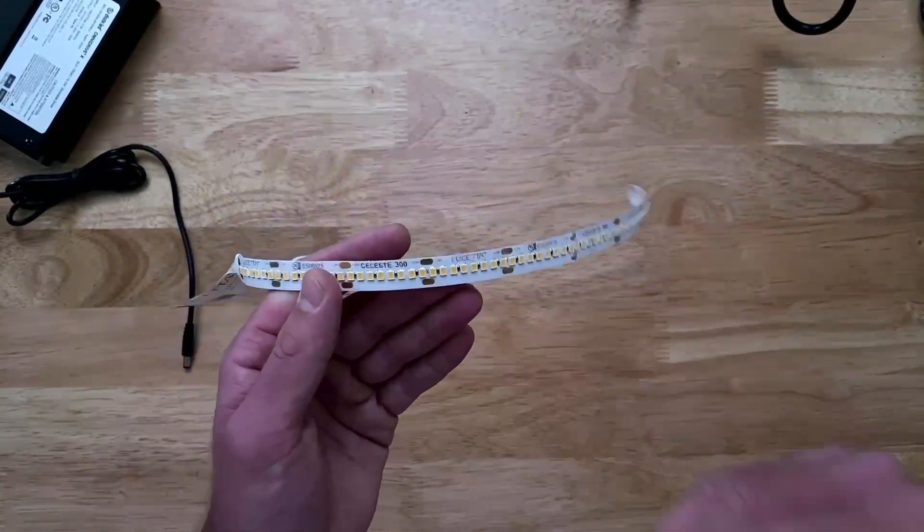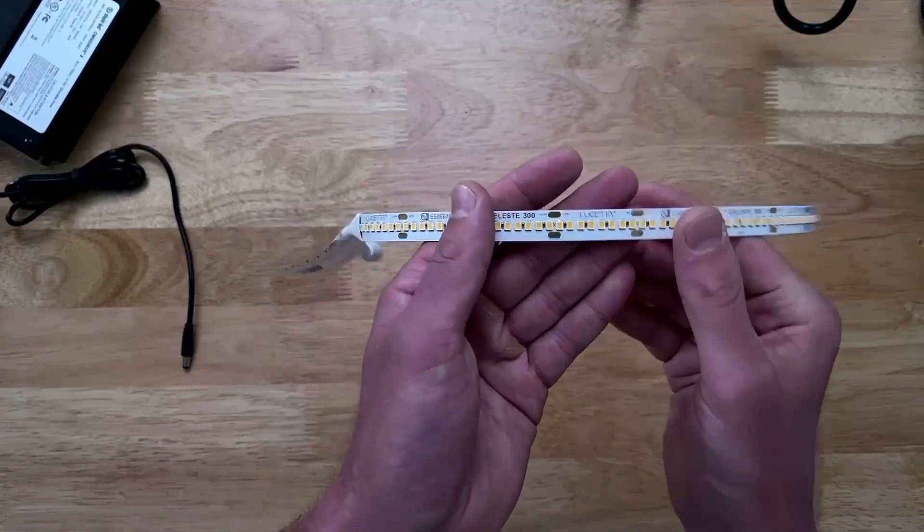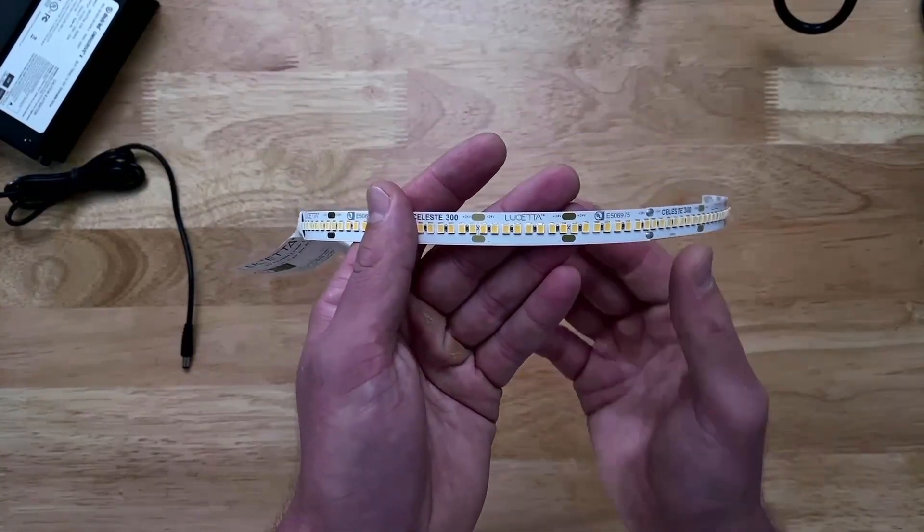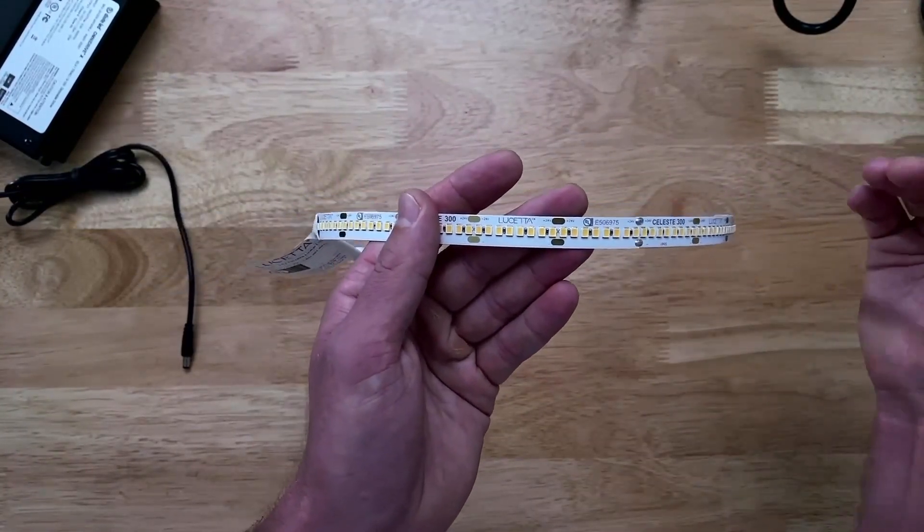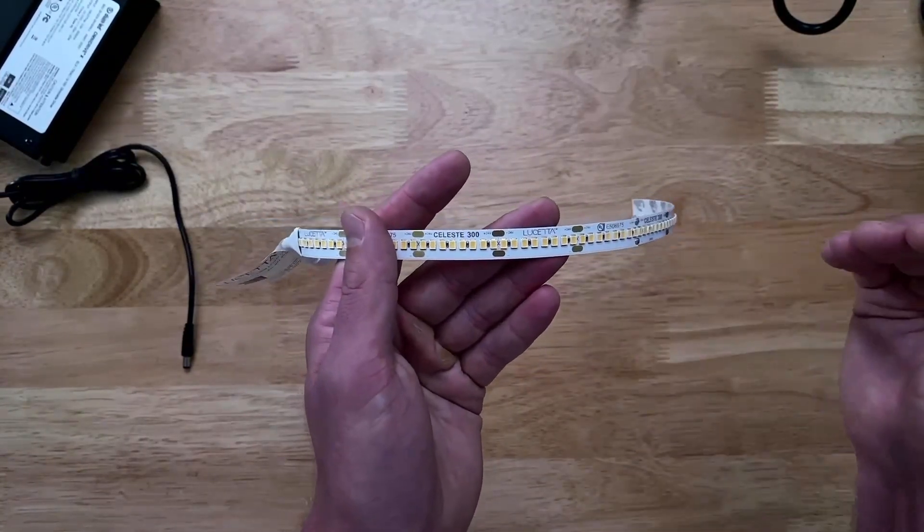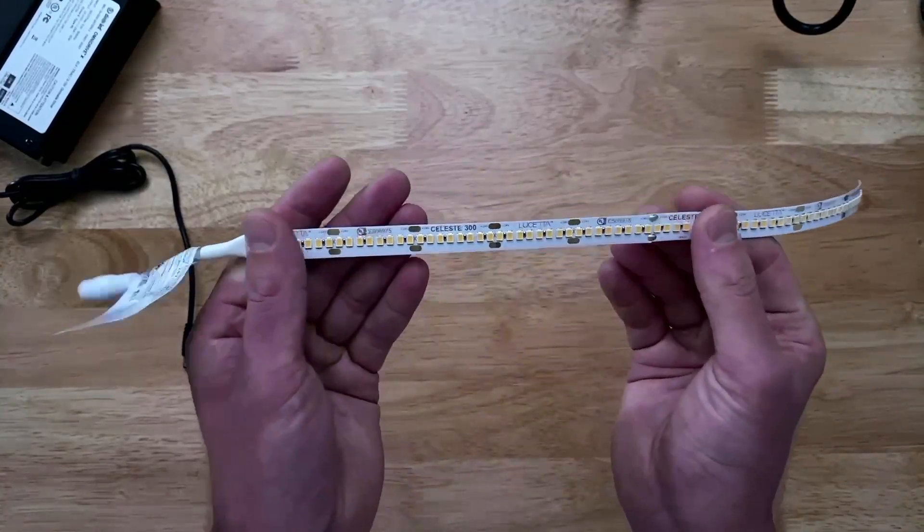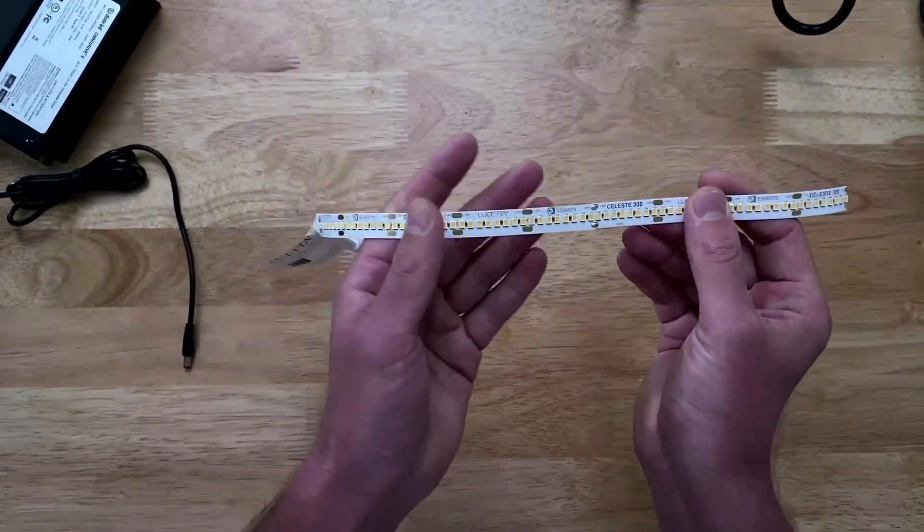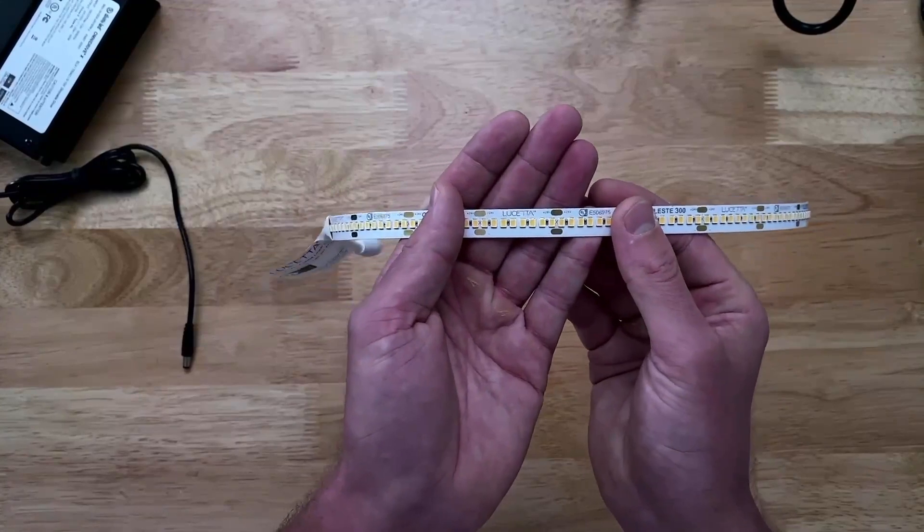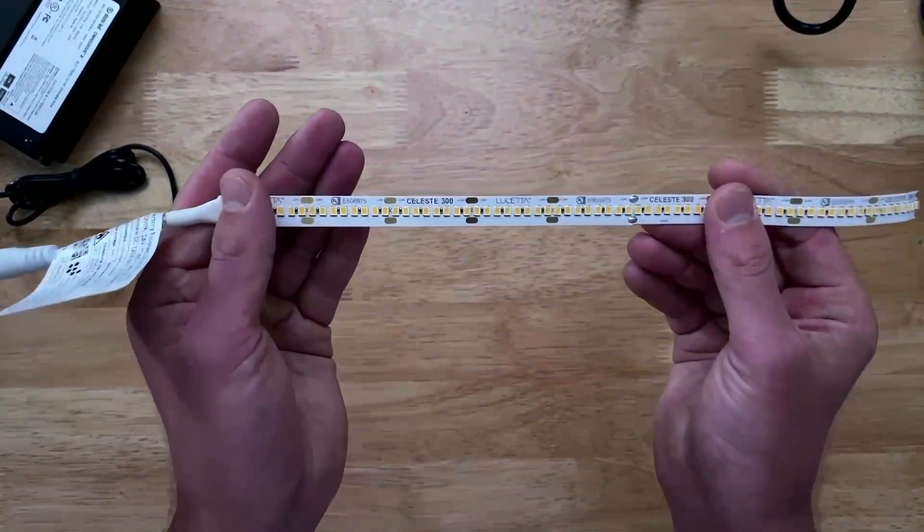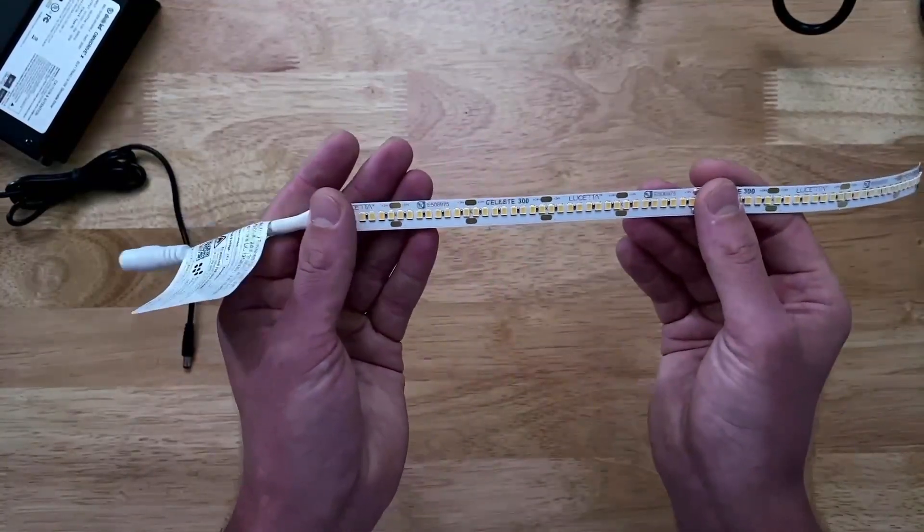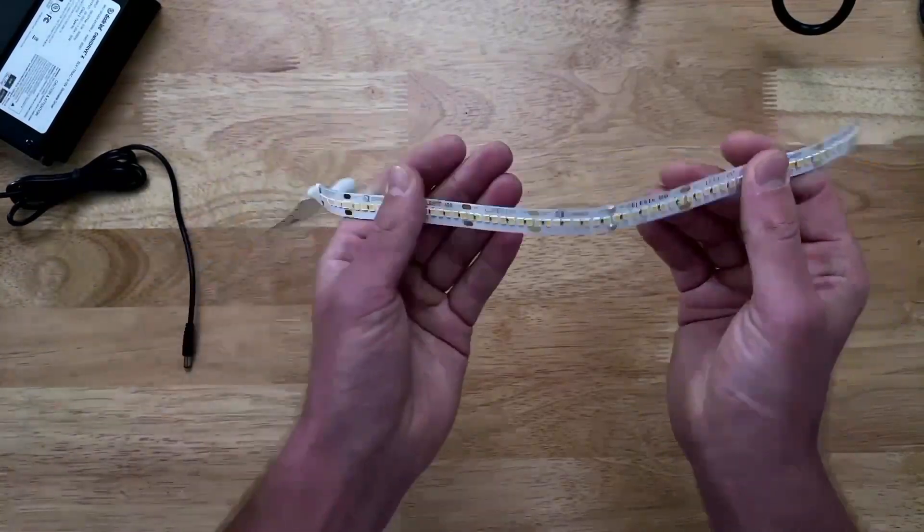And then something probably the most unique thing I always want to touch on with Celeste tape light is our custom phosphor mix. So this is a proprietary mix that we created. It's unique in the industry. It gives us some of the highest CRI ranges out there, gamut fidelity. And what's unique about it is that it's the same phosphor mix we use throughout all of our products. So now if you use Celeste and you do a certain part of the project, and then maybe six months later you add on to that project, if you use 2700 Kelvin earlier, it's going to be the exact same 2700 Kelvin when you order it again. It is completely consistent across the board. There is no color shift or CCT shift.